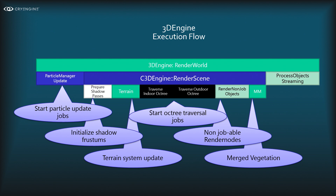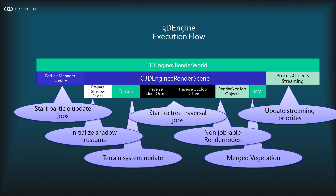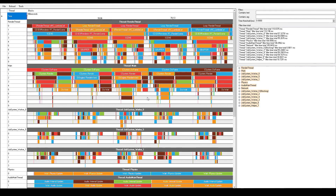There's also a special case for rendering objects that can be jobified, and then a merged vegetation system for rendering massive amounts of grass and trees. At the end of RenderWorld, after all objects and algorithms are updated, we determine what LODs and texture LODs are needed and schedule updates for the streaming systems.